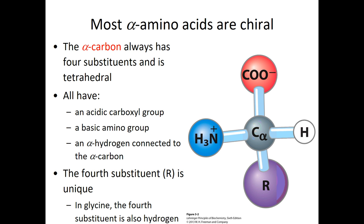All amino acids have this alpha carbon with four substituents sticking out. Since most of our amino acids have four different things bonded to that alpha carbon, they are going to be chiral. Now there is an exception — glycine, our simplest amino acid, has an R group that is hydrogen, so it's the only one that's not chiral. All amino acids are going to have the alpha carbon, a hydrogen, a carboxylic acid, and an amino group. Then there's a fourth substituent that is different, and that's really what gives us the 20 common amino acids — these different R groups.